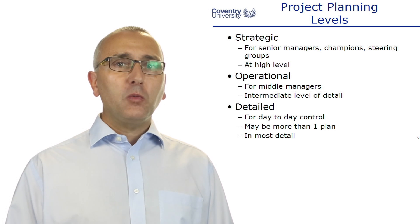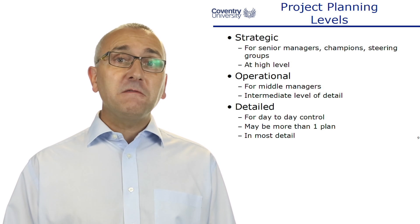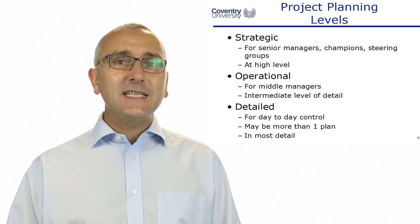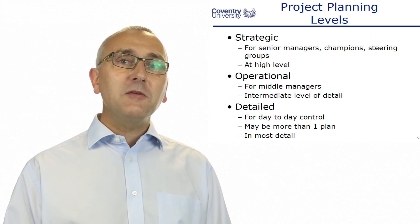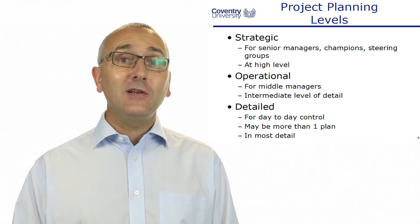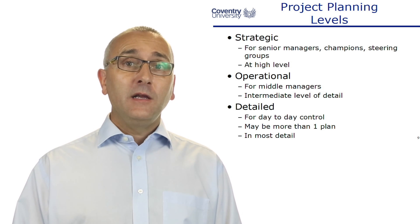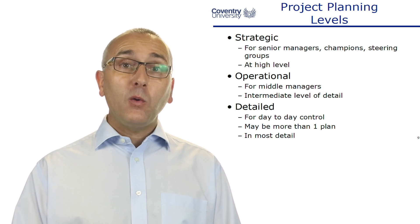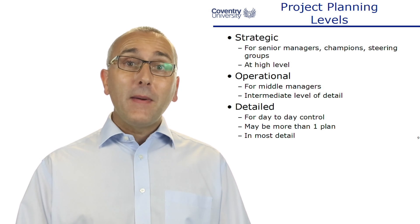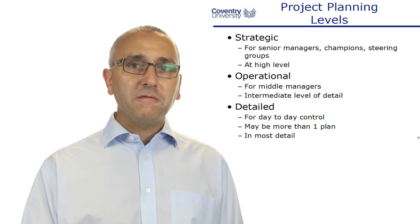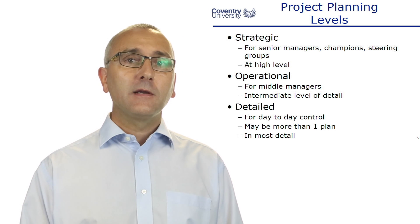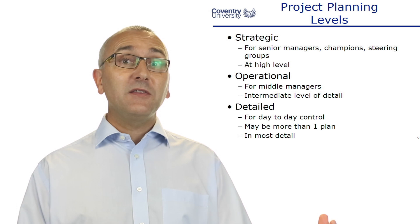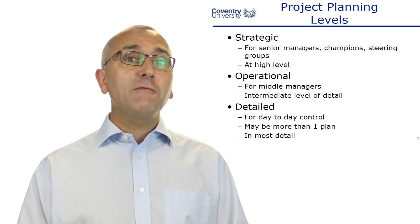There might need to be an operational plan for middle management. For example, the manufacturing department needs to know when the design is finished or when the sales and marketing process starts, but they don't need to see the detail of the sales or design plans. Middle managers need an awareness of the whole project at a middle level of detail. The detail plan is for day-to-day control of the project, and there might be more than one of these. The design department will have a detailed plan for designing the new product; the manufacturing department will have a detailed plan for clearing factory space, installing new machines, and training operators. These departments do not need to see each other's detailed plans — so there could be several versions of these detailed plans.